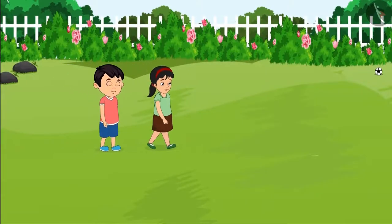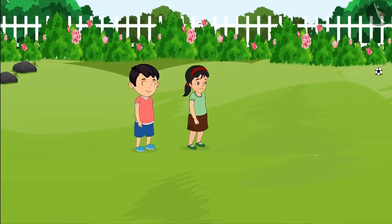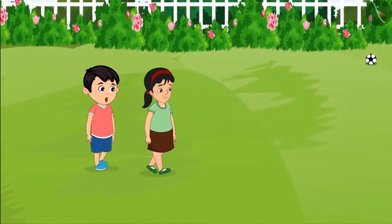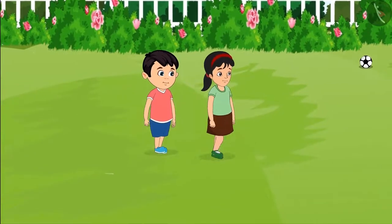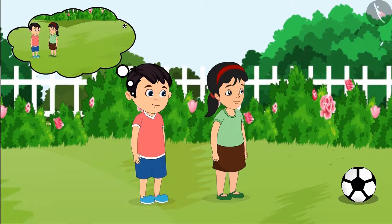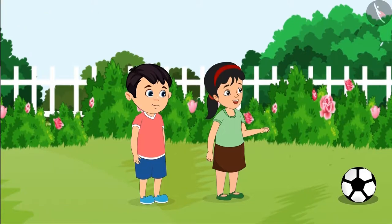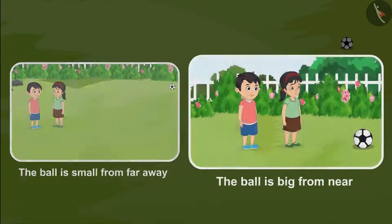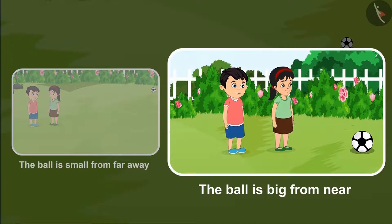Pinky and Chotu went near the ball. Chotu says: Pinky, this ball is looking bigger as we are coming closer to it. See Pinky, this ball was looking small and now it is looking big. Why is it so? Pinky confirms: you are right Chotu, it is a big ball. Children, Chotu felt that the ball was small from a distance and when he went near, it is looking big.